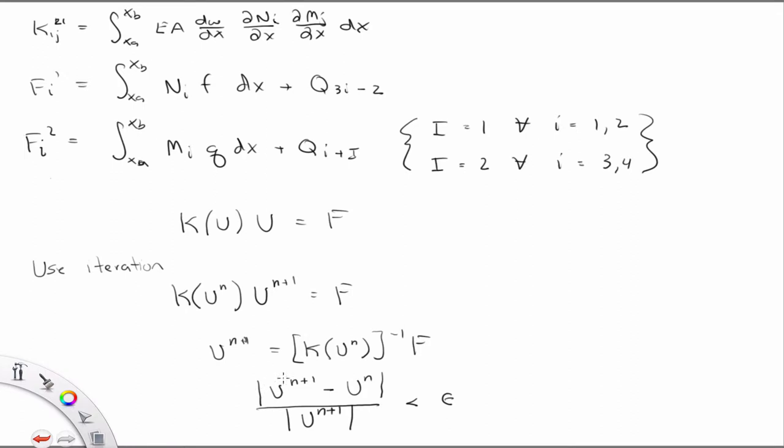So where the difference between what we solve for at U N plus 1 minus U at N, over the magnitude of U N plus 1, is less than some small number, say 10 to the minus 6 or something, right?